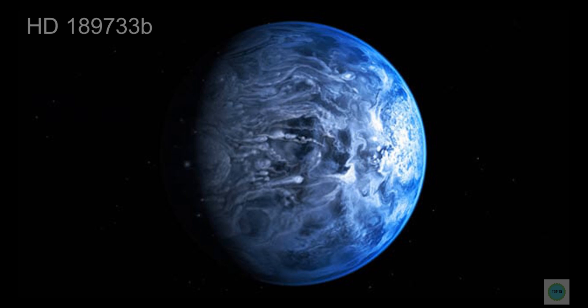Top 10 Deadliest Planets in the Universe. Number 10 is HD 189733b. In 2005, cosmologists found a Jupiter-sized exoplanet, HD 189733b, with an unmistakable Earth-like blue color 63 light-years away.